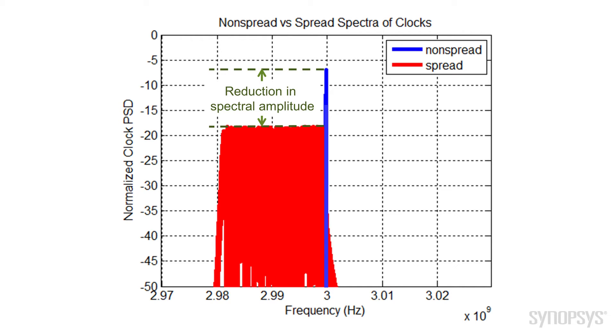By spreading the clock, we occupy a wider frequency band with that clock, but the energy at any individual frequency is lowered. Typically, standards try to achieve at least 10 dB of spectral reduction by spreading the clock.